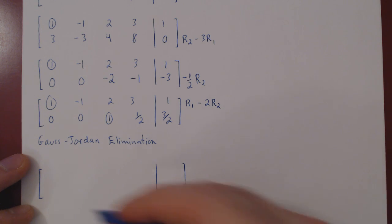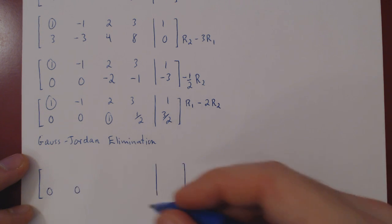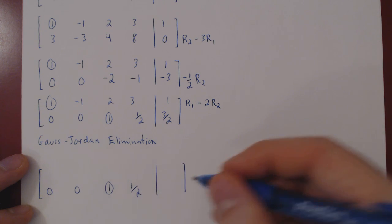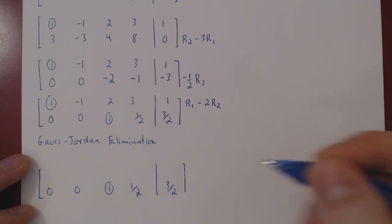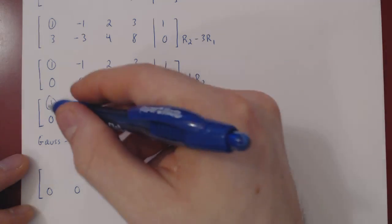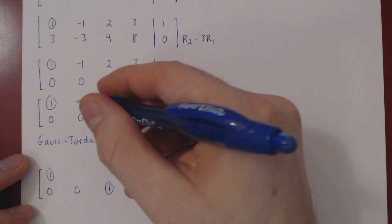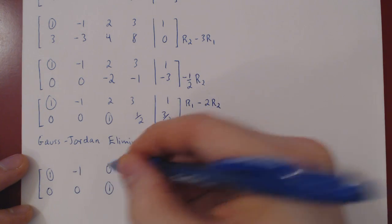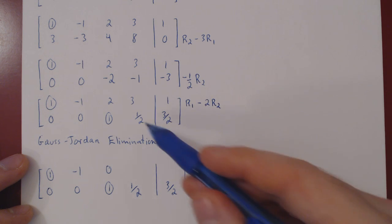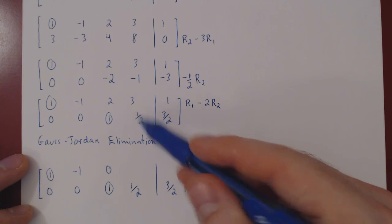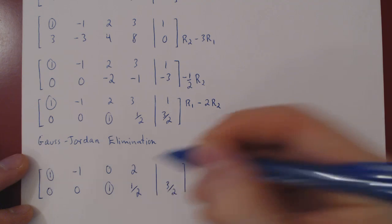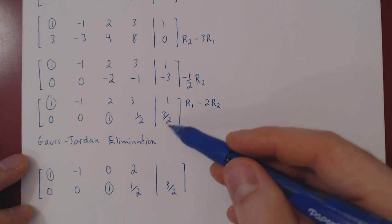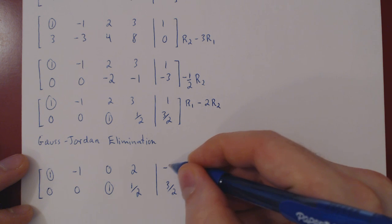We can recopy row 2, we're not changing it. 3 minus 2 times 1 half, which is 1, 3 minus 1 is 2. 1 minus 2 times 3 half, which is 3, 1 minus 3, negative 2.